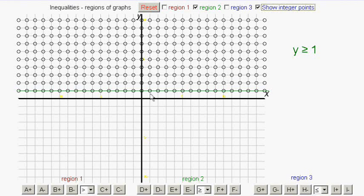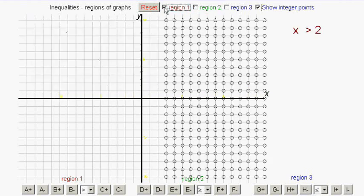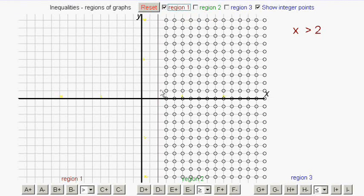Notice one important difference between this one and the last one. Because we have the or equal bit, then whole number points along the line are included. So we draw those. The previous example, they won't include it because we didn't have the or equals bit.